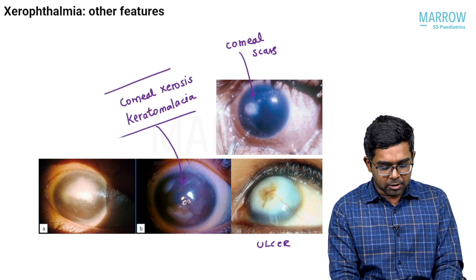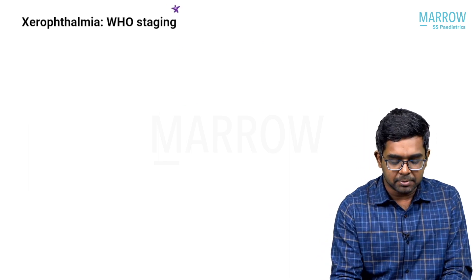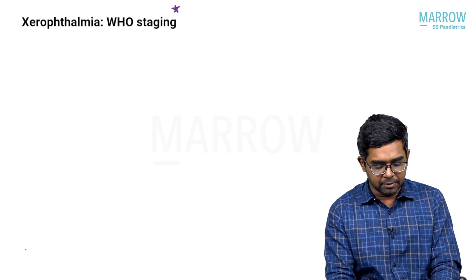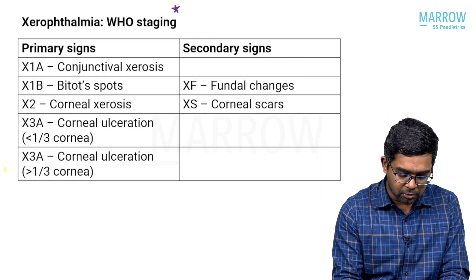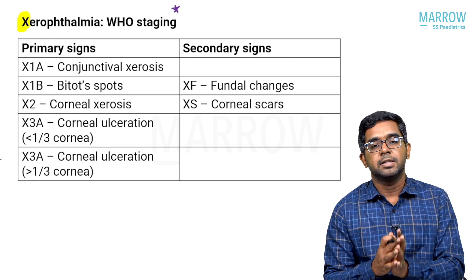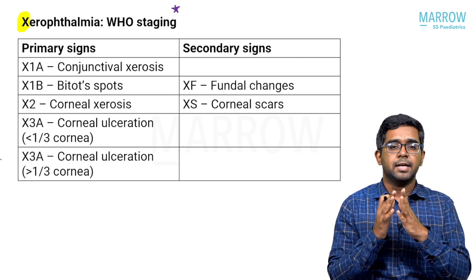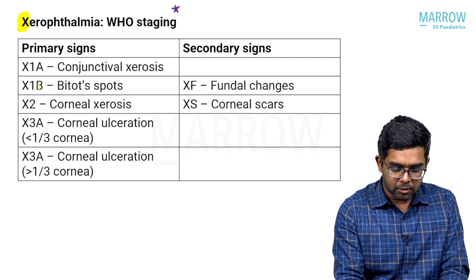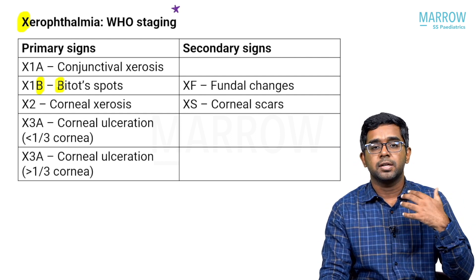There is a WHO staging for xerophthalmia, denoted with 'X' for xerophthalmia, which is very important for exams. It divides into primary and secondary signs. In primary signs: X1a is conjunctival xerosis — the first sign; X1b is for Bitot's spots; X2 is corneal xerosis involving the cornea.